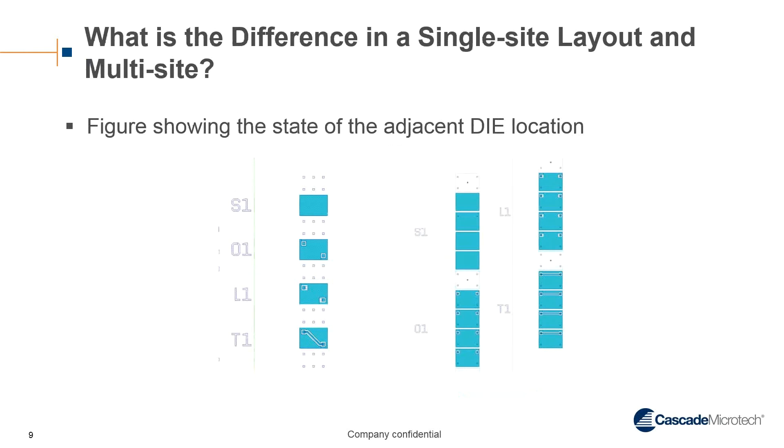What is the difference in a single-site layout and a multi-site layout for your calibration substrate? If you look on the left-hand side, this is a single-site calibration substrate layout, where it has a single-pad site for each calibration standard. So you can see there's a single short standard, then there's alignment marks below it, an open, alignment marks, a load, and then a through. The right-hand side is a quad-site probe card calibration substrate, where each site on the probe card is contacting the same standard at the same time. So that is, every site is shorted, open, load, or through. And one additional advantage of using a multi-site cal substrate is the number of steps required in order to calibrate is reduced by a factor of four, since you can actually measure each site at the same time on the same step, where on the single site, you have to do four steps per standard.